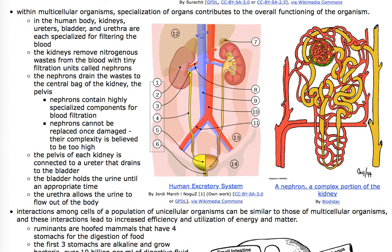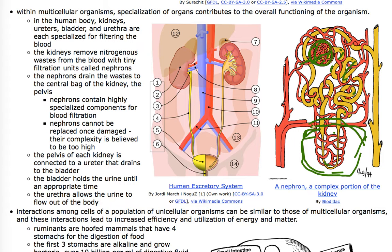Let's talk about how the nephron works. Blood goes into this red ball of capillaries, and chemicals leak out into this pale orange tube. That tube takes the leaked chemicals and by active transport pushes chemicals that are worth saving back into the bloodstream, leaving behind mostly nitrogenous waste. The loop's job is to make the surrounding area very salty, and as fluid comes up through the other side, salts are pumped out making that region highly concentrated.